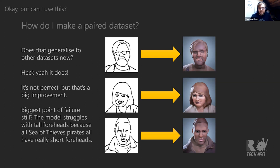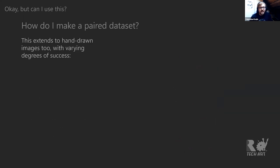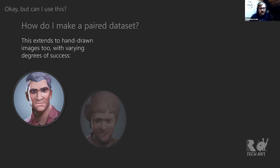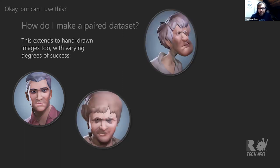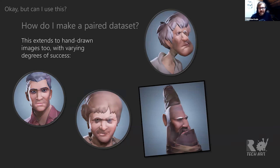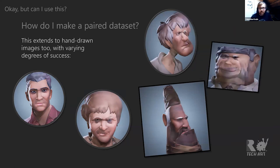That's a really good example of how you can work with the data set to keep refining and improving your output, especially when you have the ability to fully generate your own data set — which we often do. The biggest point of failure here is the model struggles with tall foreheads because all Sea of Thieves pirates have really short foreheads, so when it sees a tall forehead it expects a hairline or a hat. Interestingly, this generalizes even to other hand-drawn images — you can do all kinds of characters and sketches with this model; it becomes really robust.